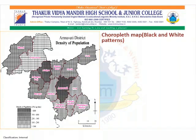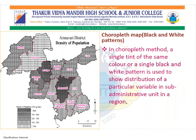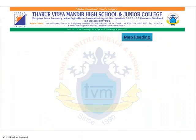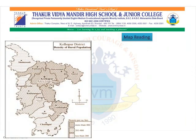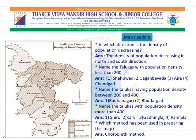In the previous slide, we saw the Amravati district density of population map where color shades were used. In this figure, we can see a choropleth map where a black and white pattern is used. In the choropleth method, a single tint of the same color or a single black and white pattern is used to show the distribution of a particular variable in some administrative unit in a region. The pattern becomes darker as values increase and lighter where values decrease — where values are increasing, the pattern becomes denser.